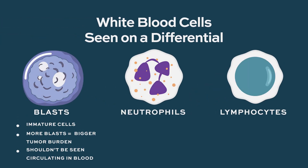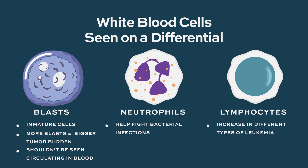Blasts are really immature cells and they go up when you have AML. The more blasts you have, it's like having a bigger tumor burden. You shouldn't be able to see blasts circulating. The neutrophils help you fight bacterial infections.